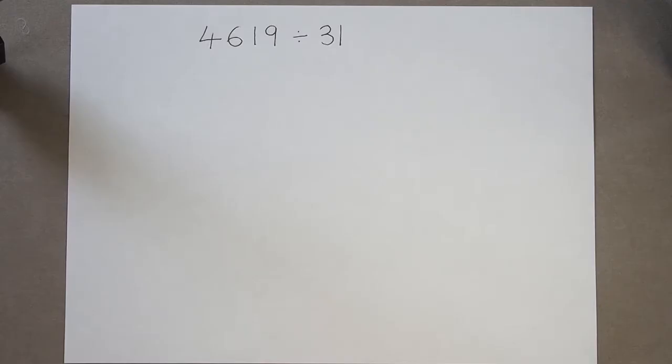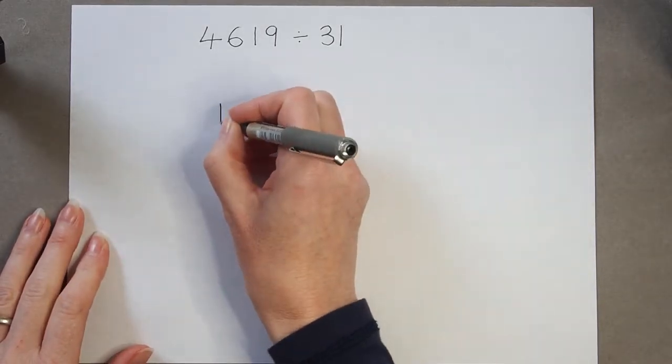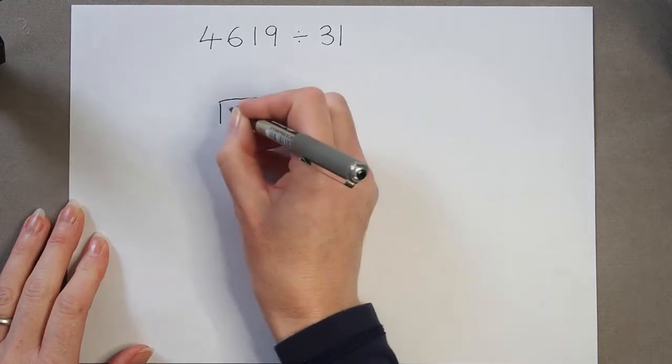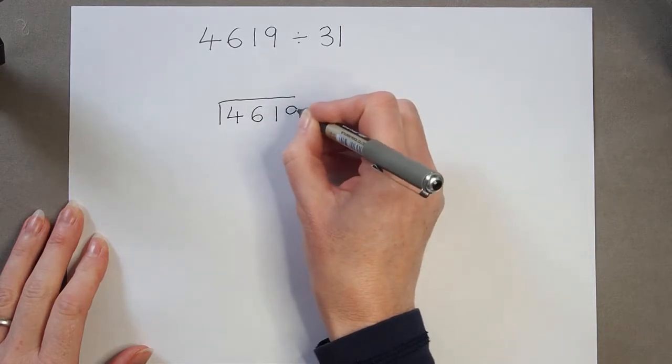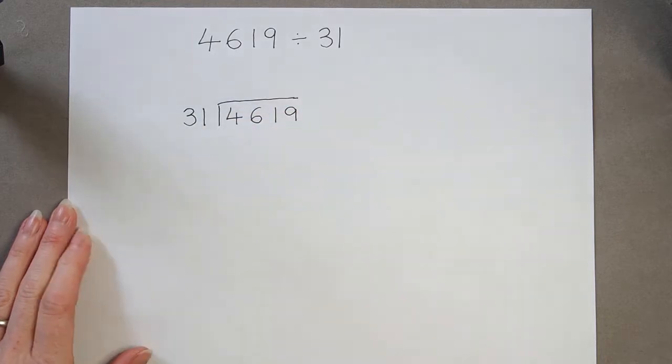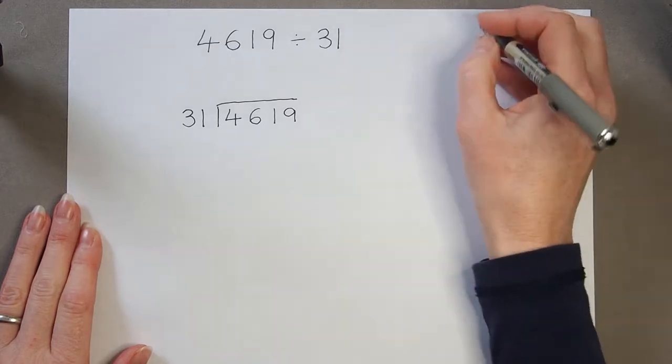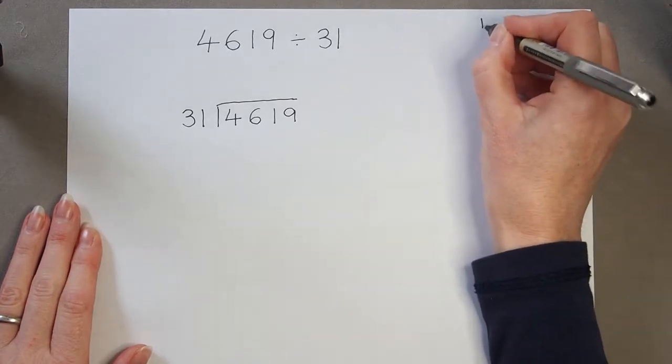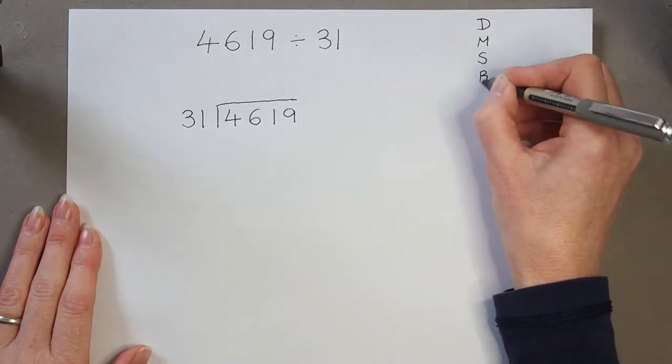We're going to try another long division calculation. We're going to write that number as normal in the box: 4619 divided by 31. Because we're using the long division method, I'm just going to write down those letters to remind me: Does McDonald's Sell Burgers.